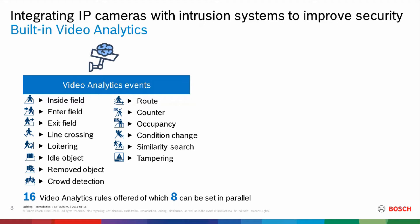Here's a list of some of the analytics built into all of our cameras. For example: object inside a field, someone has entered that field, someone has left that field, they've crossed the line, loitering, idle objects — something has been left behind — crowd detection, occupancy, has somebody fallen down, condition change, and camera tampering. These 16 analytics — eight of them can be set in parallel, which means it can do more than one thing at a time. We also have filters: size, speed, and color to classify events. If a truck backs up to your loading dock, that's different than a person, and the camera can tell the difference. And if the analytics don't do quite what you want, you can write scripts for even more detailed analysis.